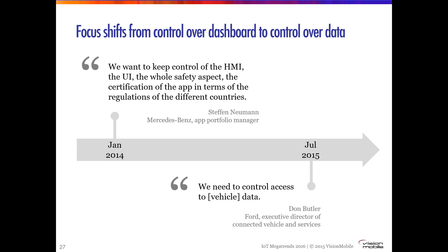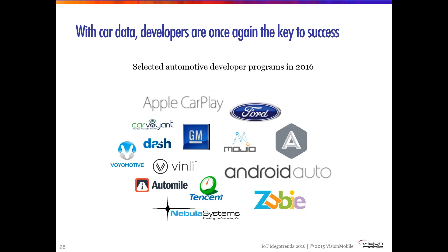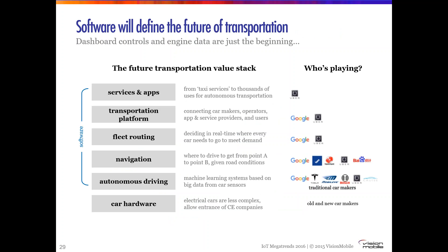Now though, the new thing in town is using data coming from the car — accessing vehicle data and doing all kinds of interesting things with it, from driver scoring and insurance implications to fleet management and other applications. A lot of the activity nowadays is around car data rather than infotainment. We see this in the language car brands use as well: in 2014 they were talking about keeping control of the human-machine interface; in late 2015 going into 2016, car makers are talking about controlling access to vehicle data.